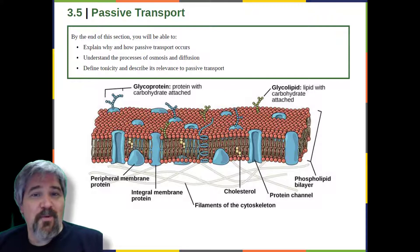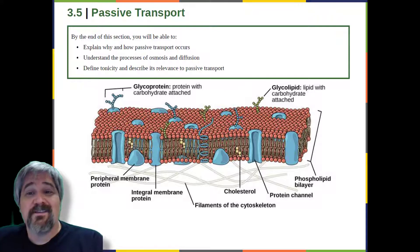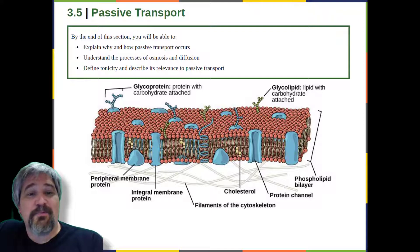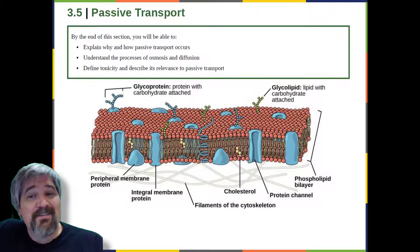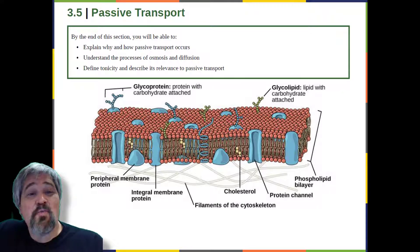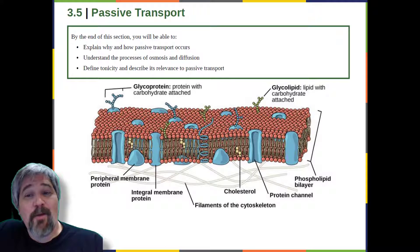Recall that plasma membranes have hydrophilic and hydrophobic regions. This characteristic helps the movement of certain materials through the membrane and hinders the movement of others. Lipid soluble materials can easily slip through the hydrophobic lipid core of the membrane. Substances such as the fat-soluble vitamins A, D, E, and K readily pass through the plasma membranes in the digestive tract and other organs. Fat-soluble drugs also gain easy entry into cells and are readily transported into the body's tissues and organs. Molecules of oxygen and carbon dioxide have no charge and pass through by simple diffusion.